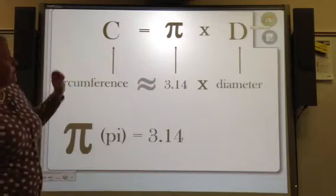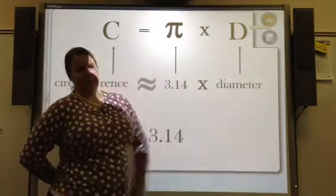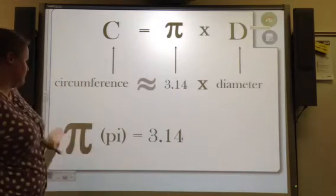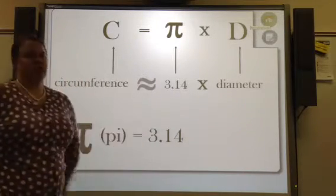Circumference, which is C, equals pi times D. For those of you that are unfamiliar with pi, this is the symbol, pi equals 3.14.